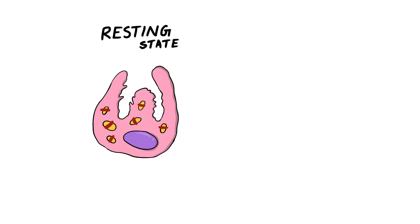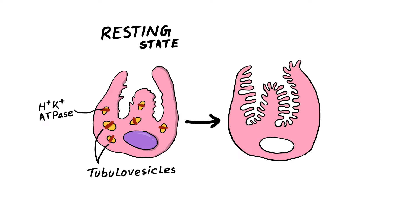Now let's discuss the control of acid production. At rest the number of hydrogen potassium ATPase present within the parietal cell membrane is minimal. The rest are sequestered within the tubulovesicles in the parietal cells. Here you can see the active state of parietal cells.